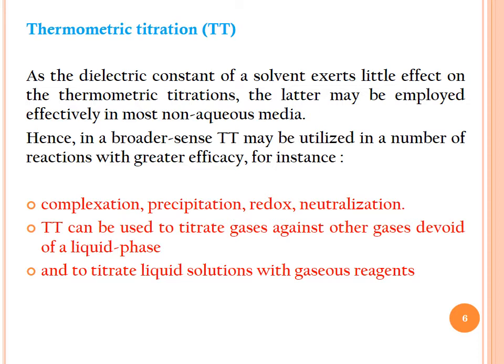In complexometric titration, a complex is formed between EDTA and a metal ion. Precipitation titration usually involves argentometric titration, where silver nitrate produces a precipitate of silver chloride. Redox titration involves oxidation-reduction reactions, typically using KMnO4 or potassium perchlorate. Neutralization titration is a simple acid-base titration. TT can also be used to titrate gases against other gases or to titrate liquid solutions with gaseous reagents.